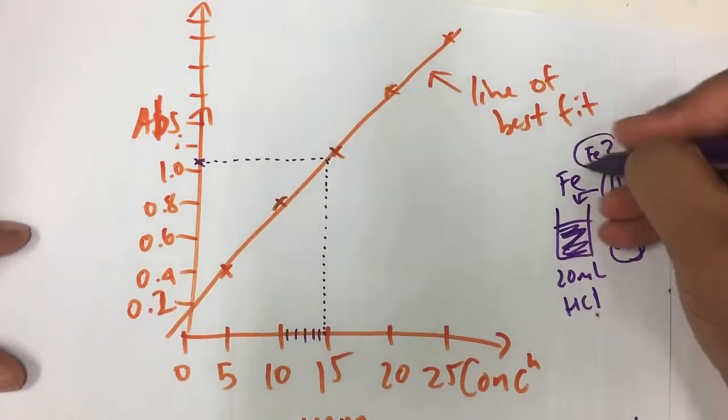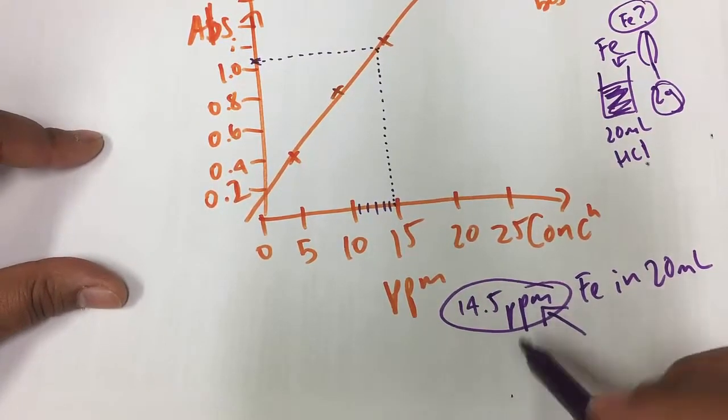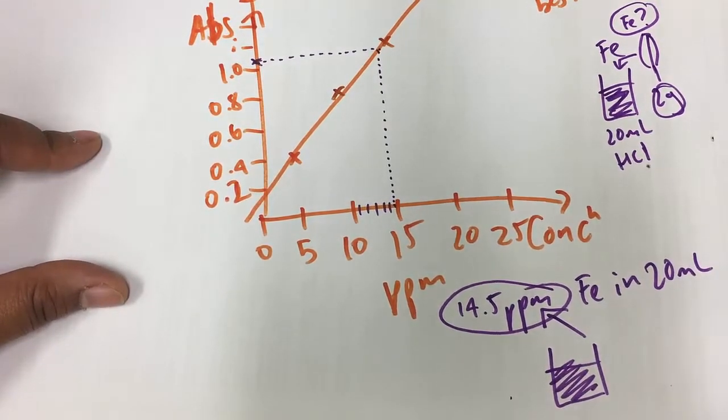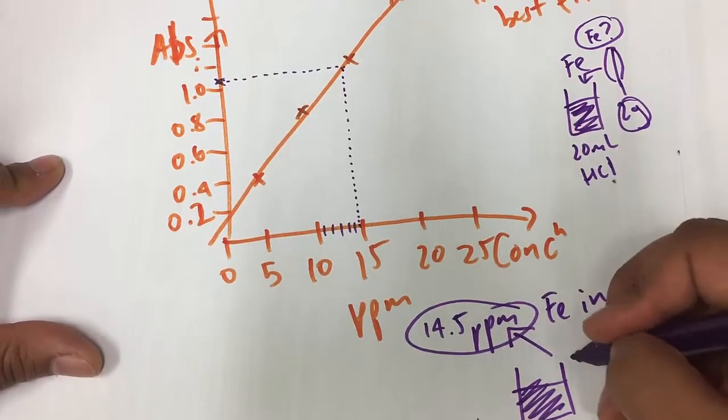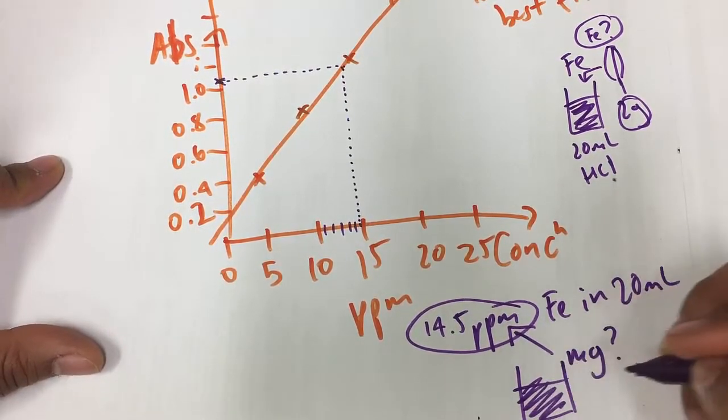And if the absorbance was around here, we go across, we see where did that hit the line. And again, come down to see what the concentration is. Now I've done this in ppm. It could be in different types of concentrations like moles per liter or ppb. It just depends what you're looking for. But the idea is now, my first question was, how much iron was in the spinach leaf? Now all I've done is I've found out how much or what the concentration of iron is in that sample. I haven't found the spinach leaves. That's a bit different. So in order to now look at the spinach leaves, I need to know, well, actually how much mass of iron was in that sample to begin with.